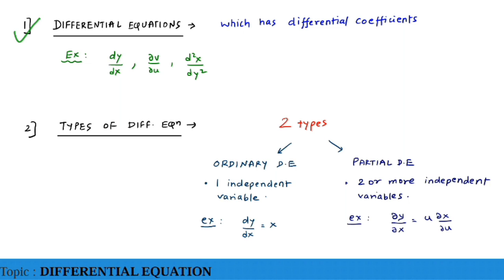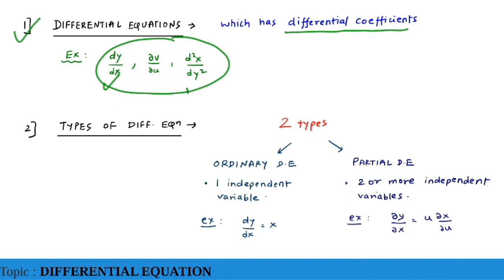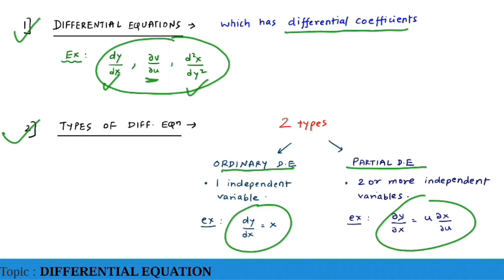A differential equation is one which has differential coefficients. There are two types: if you have two variables you use dy/dx or dx/dy (ordinary differential equation), and if you have more than two variables you use partial differential equations, written as ∂v/∂u.